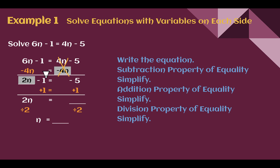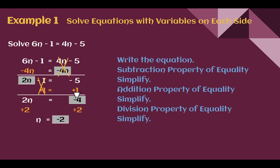Now I have 2n minus 1 equals negative 5. My variable is on the left, so I need to eliminate that constant value on the same side by doing the opposite. The opposite of minus 1 is add 1, which makes 0. Doing it to both sides: negative 5 plus 1 is negative 4. Now I have 2 times n equals negative 4, so divide both sides by 2. I find that n is equal to negative 2.